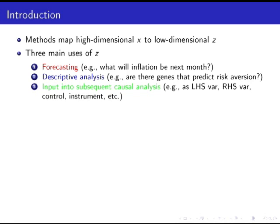The first is cases where prediction per se is what we want to do — for example, a literature on macroeconomic forecasting. Second is cases where describing the relationships between the X variables and the Y variables is of interest — for example, the genetics literature where the question is whether there are genes that determine a particular behavior or characteristic, and which genes those are. Finally, we want to take the high-dimensional X, collapse it to a lower-dimensional Z, and use Z in subsequent analysis — as a control variable, a left-hand side variable, an instrument, and so forth.